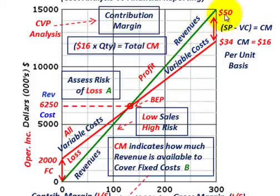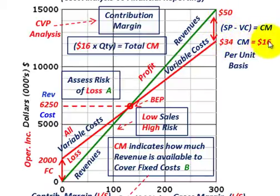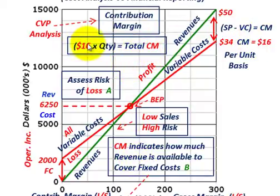For example, our revenues for each unit we sell have a selling price of $50 per unit of sales, and our variable cost on a per unit basis is $34 for each unit we sell. So the difference between our selling price of $50 and variable cost of $34 is the contribution margin on a per unit basis — $16. The total contribution margin is that $16 per unit times whatever quantity we're selling.